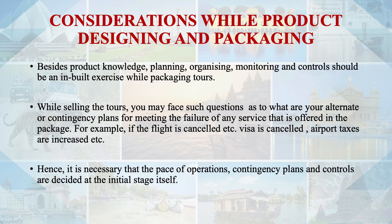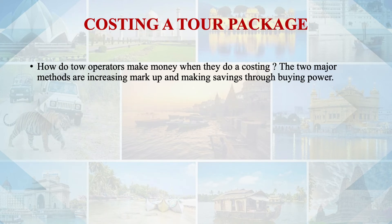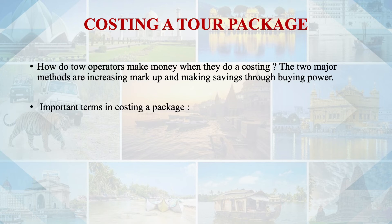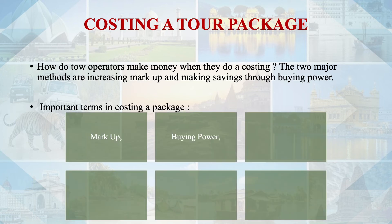The second function is costing a tour package. The two major methods tour operators use to make money are increasing markup or making savings through buying power. Important terms in costing a package include markup, buying power, net rate, gross rate, profit, and margin.